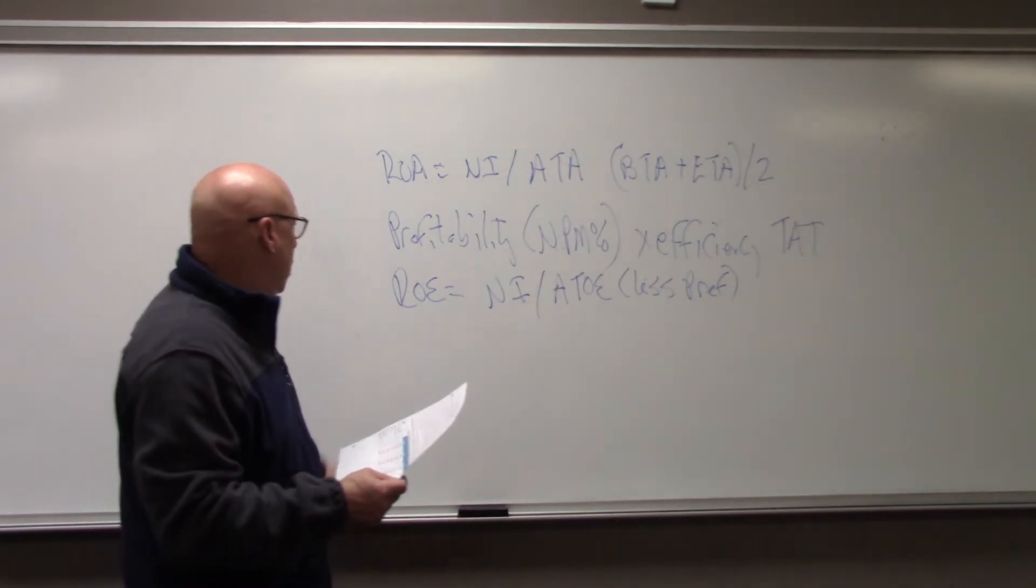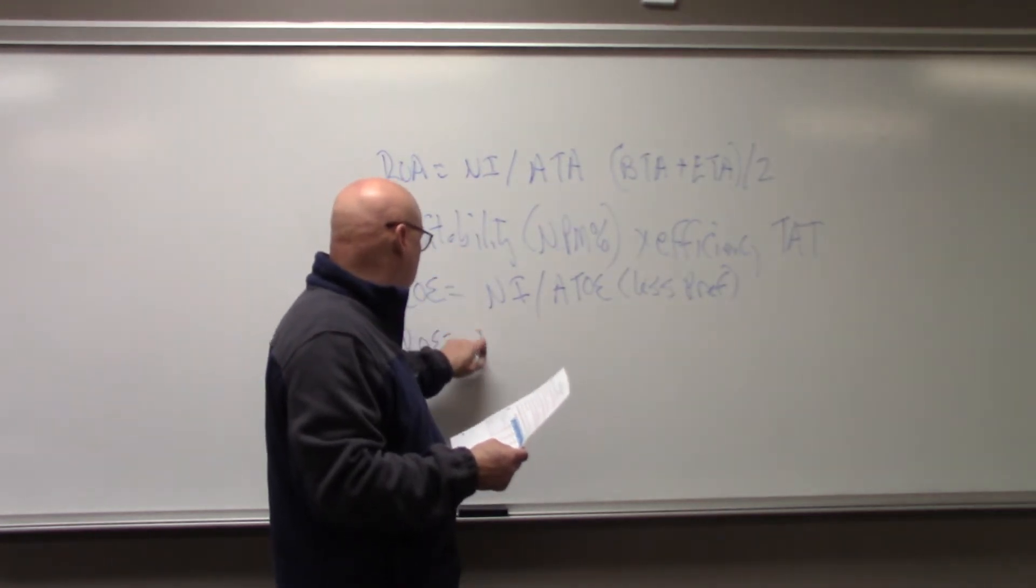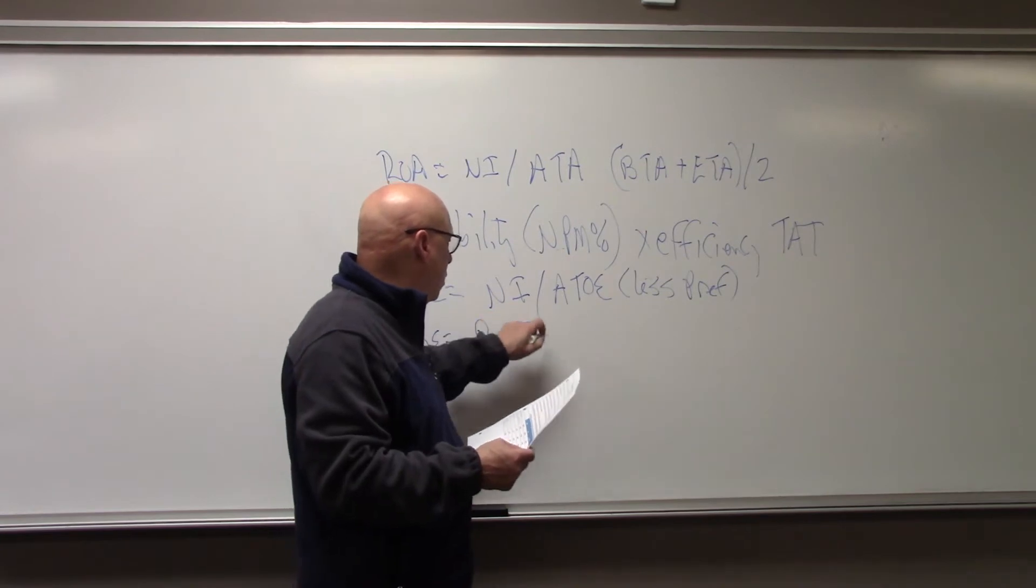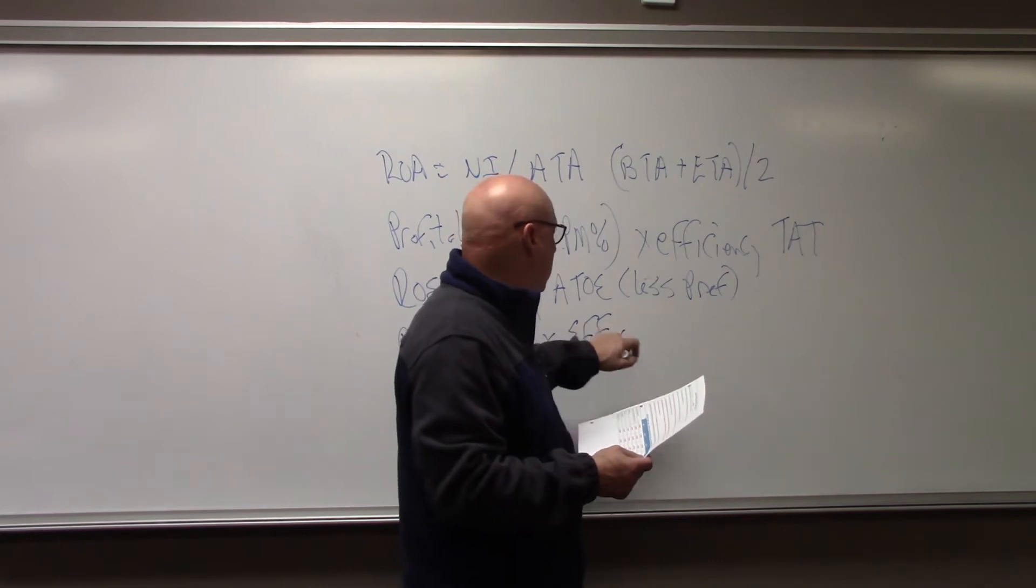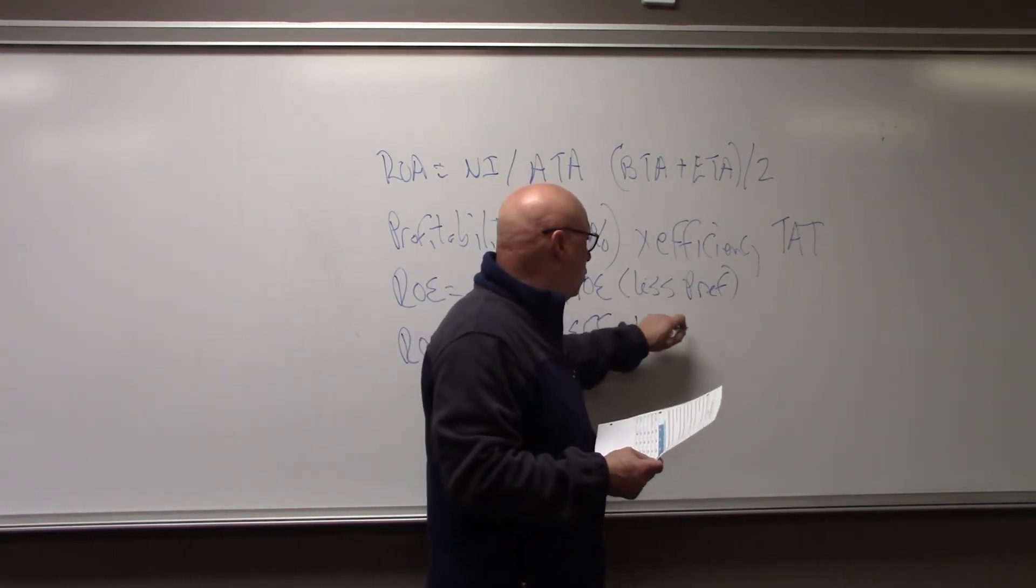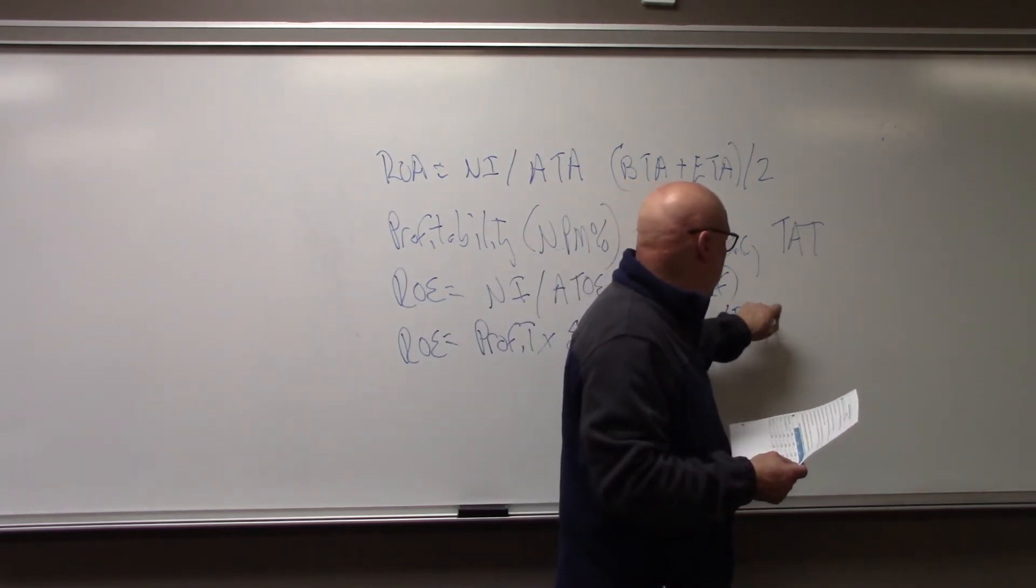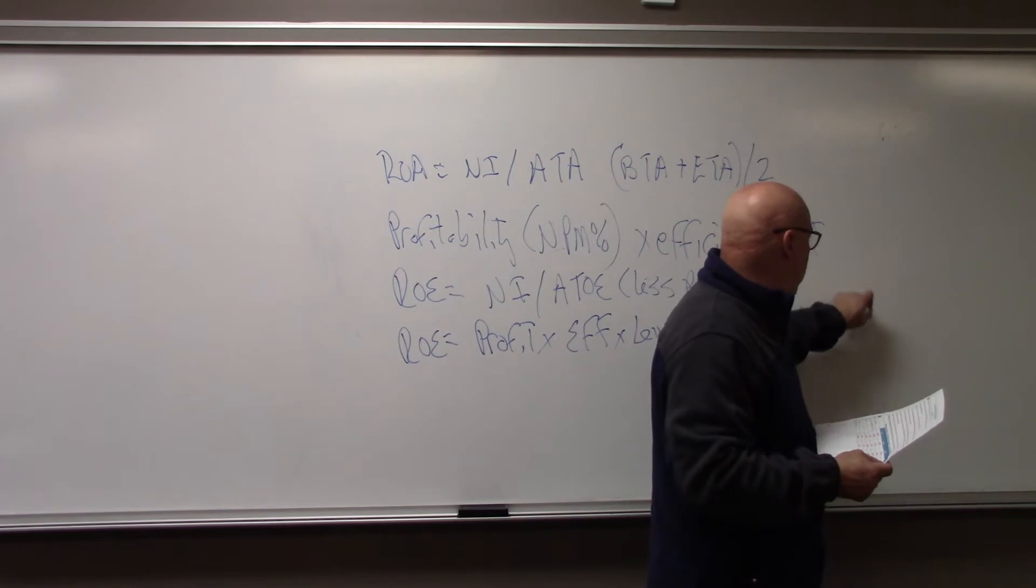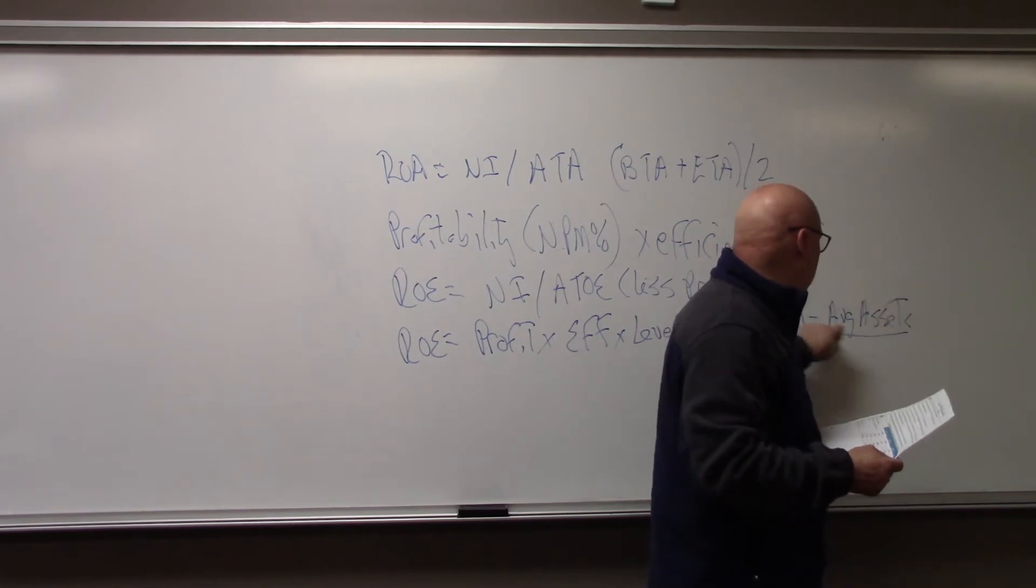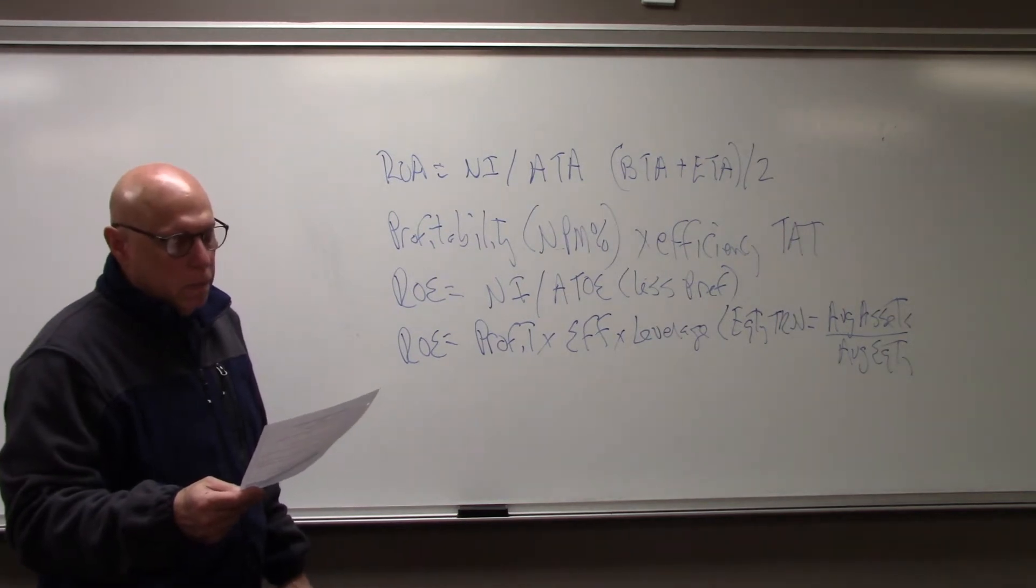What are the three components of return on equity? Like return on assets, it's profitability and efficiency. But there's a third component: leverage. What you're using here for leverage is the equity multiplier or equity turnover, which is average assets divided by average equity. That's the turnover ratio or the leverage ratio that you use.